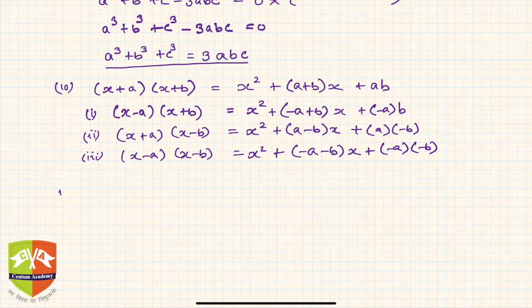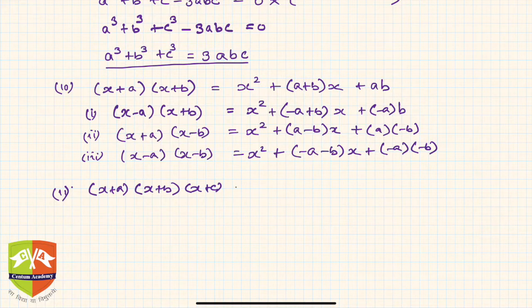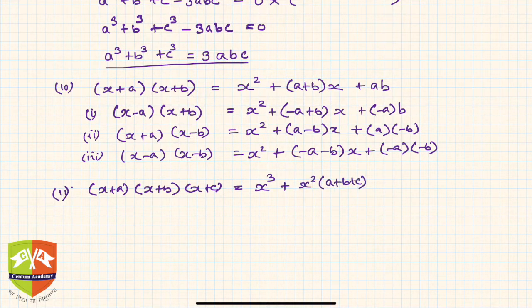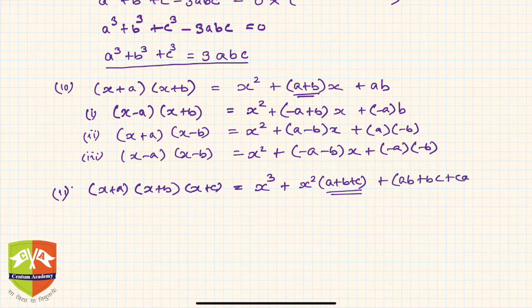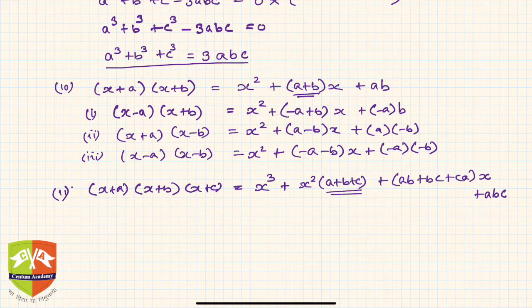If we have three factors — x plus a times x plus b times x plus c — the result is a degree three expression: x cube plus a plus b plus c times x squared plus ab plus bc plus ca times x plus abc. So notice that with two factors it was a plus b, while with three factors it becomes a plus b plus c. These are the eleven identities you must remember, and we will use them for expansion and factorization.